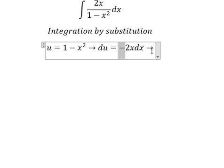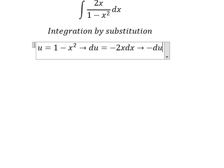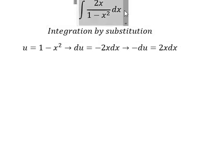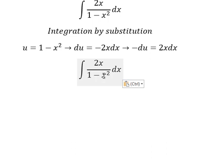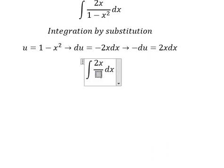So we can rewrite this, changing the denominator to u, and 2x dx becomes negative du.